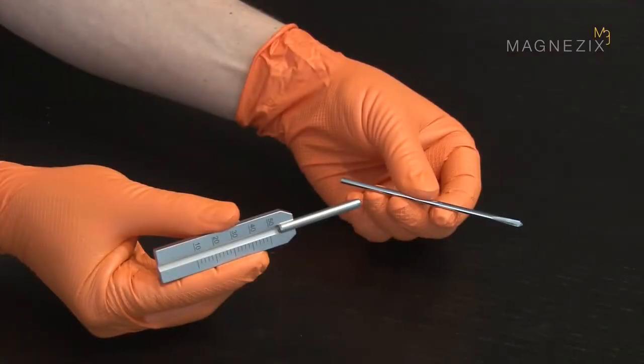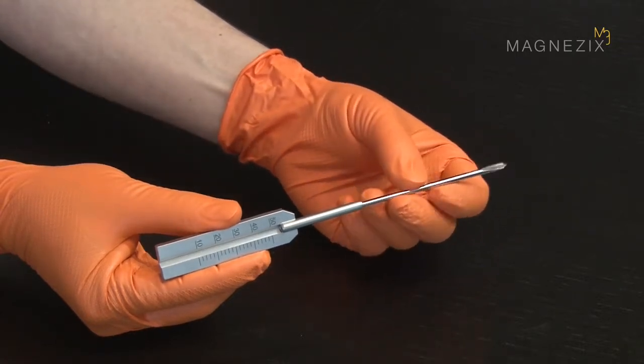If the reduction wire has been used for temporarily stabilizing the fracture situation, the length of the pin can be determined by advancing the measuring device over the reduction wire up to the bone.